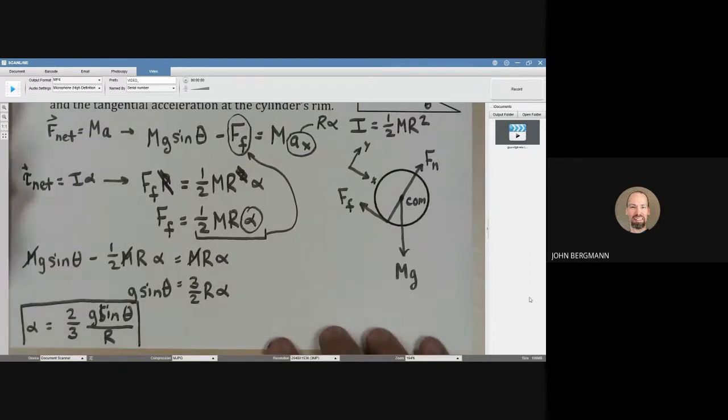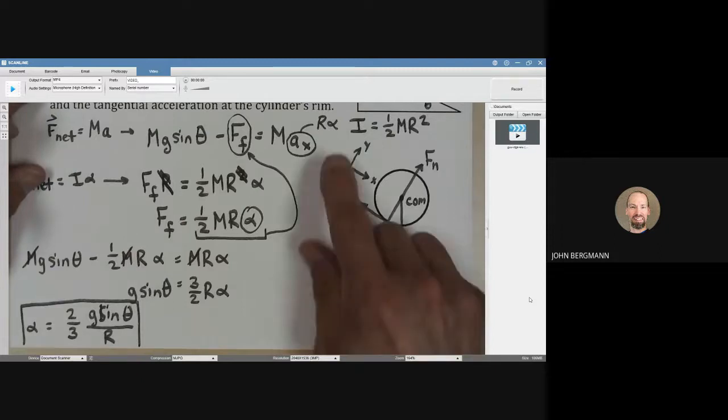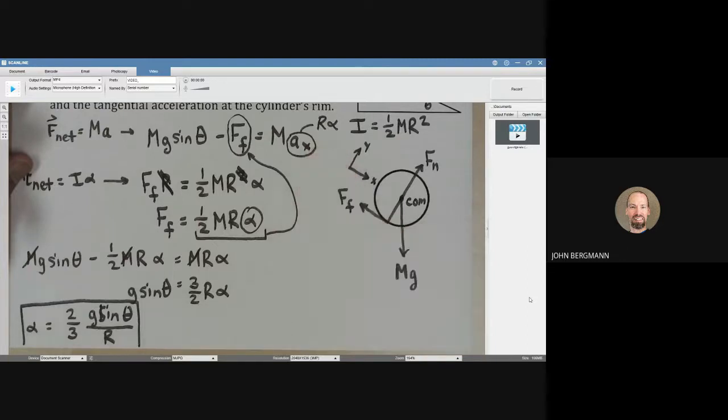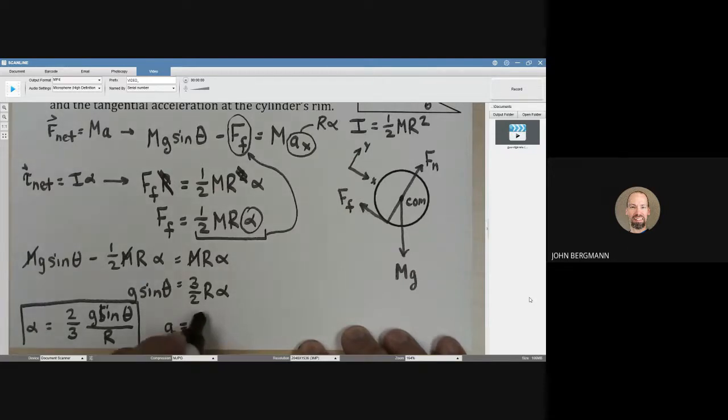The tangential acceleration is just alpha times r. So if that's alpha, multiply that by r and that's going to give us the tangential or linear acceleration. So that's going to be two-thirds g sine theta.